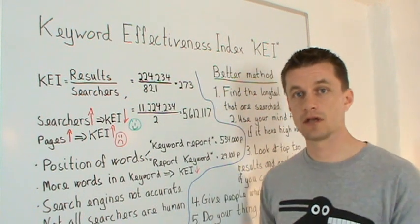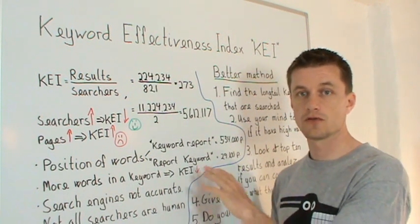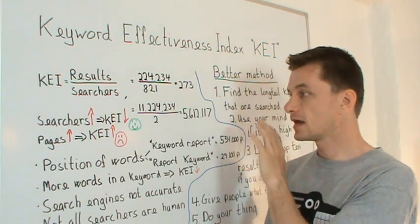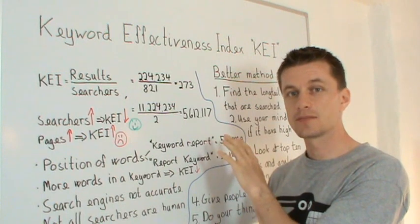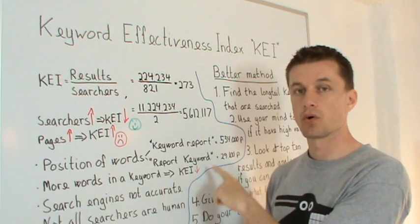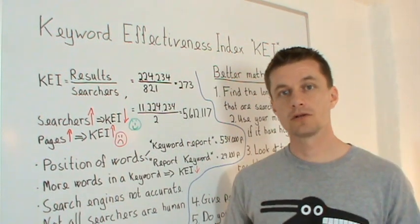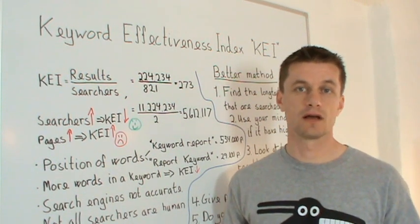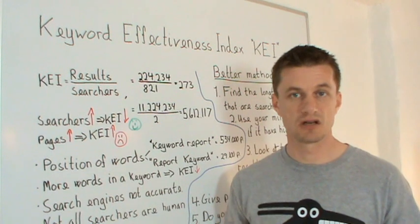But if you say there is the same amount of searches for each of them then the KEI will be 18 times less for report keyword. So always look if the order is unnatural and you will raise a flag and you have to think about is this a good number.